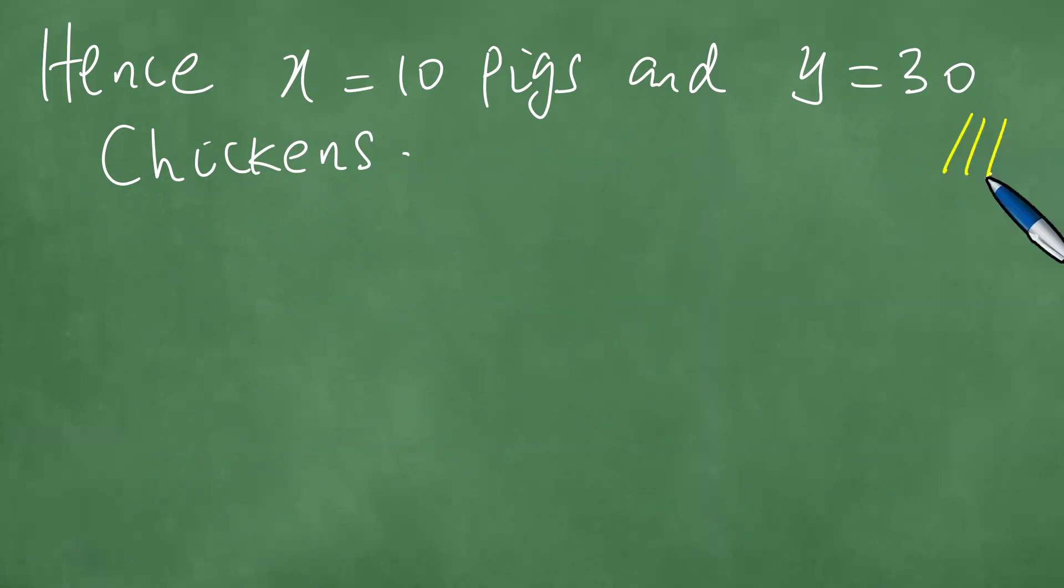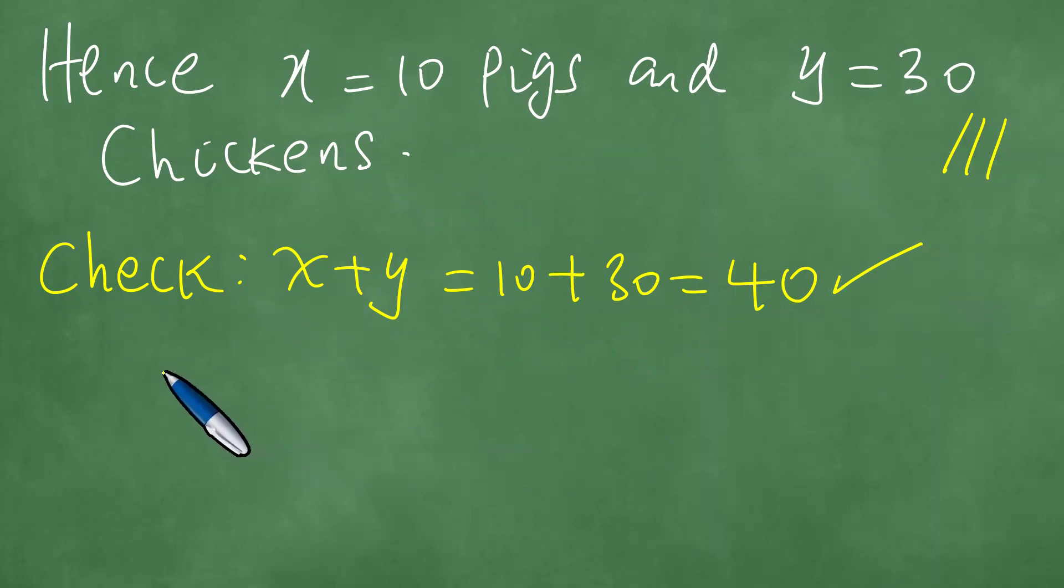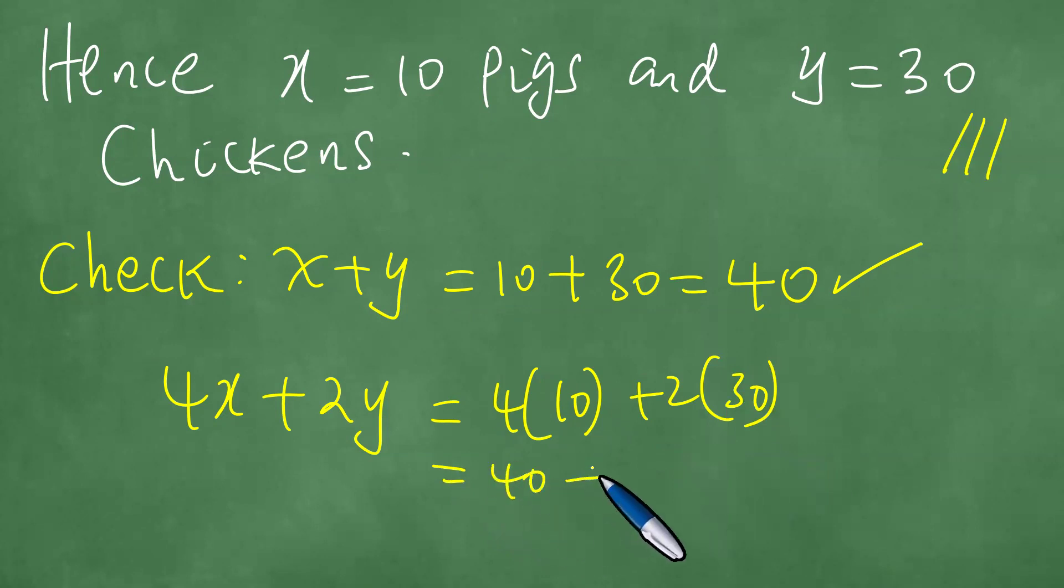But let us do a quick check of the answers. We know that X plus Y must be 40. X is 10 and Y is 30, so that indeed we have 40 pigs and chickens in the farmyard. We know that 4X plus 2Y, the number of the legs of all the pigs and chickens, was counted as 100 legs by Joseph. So we have 4 into 10 plus 2 into 30, and this is 40 plus 60, and 40 plus 60 is 100.